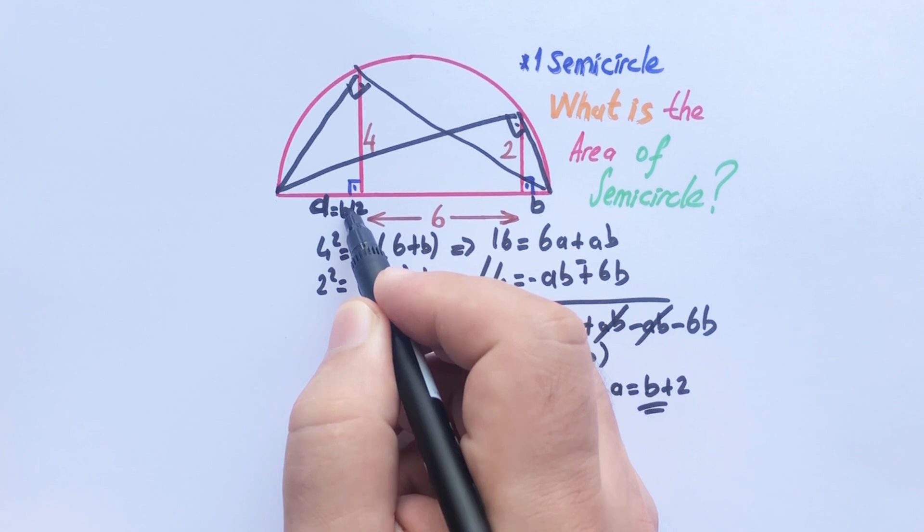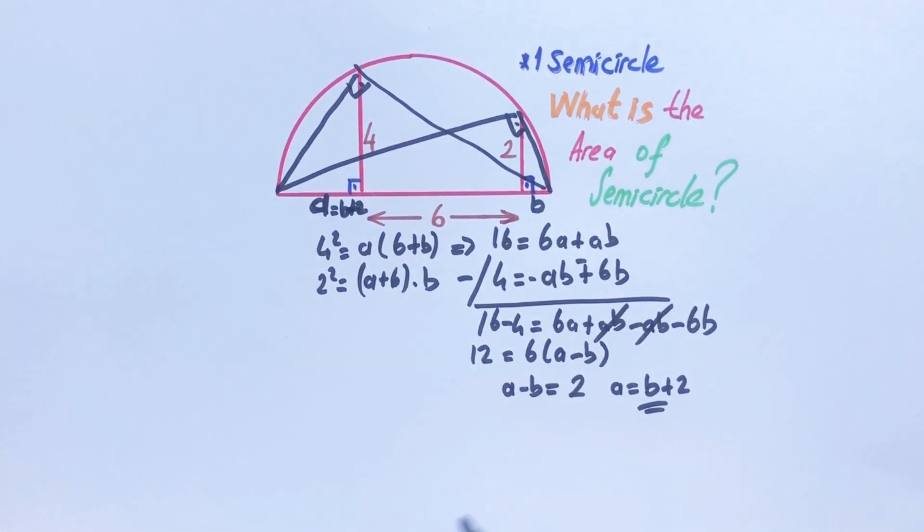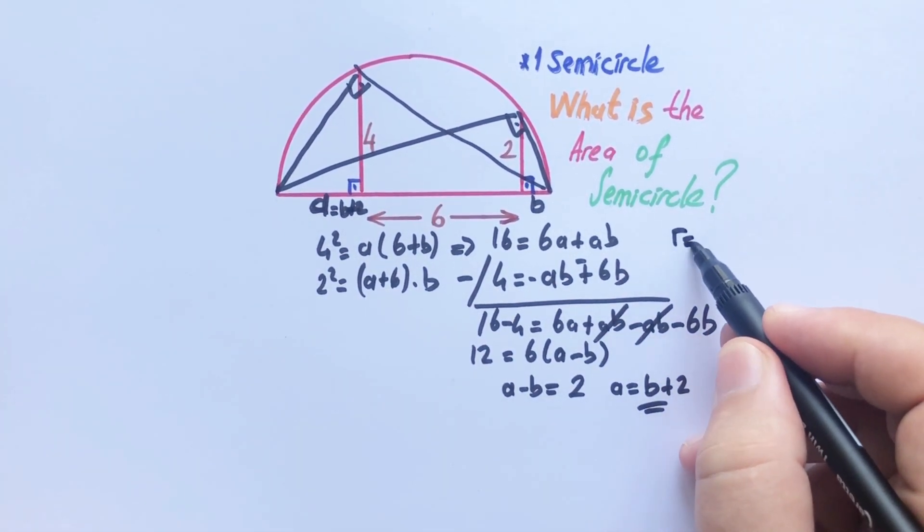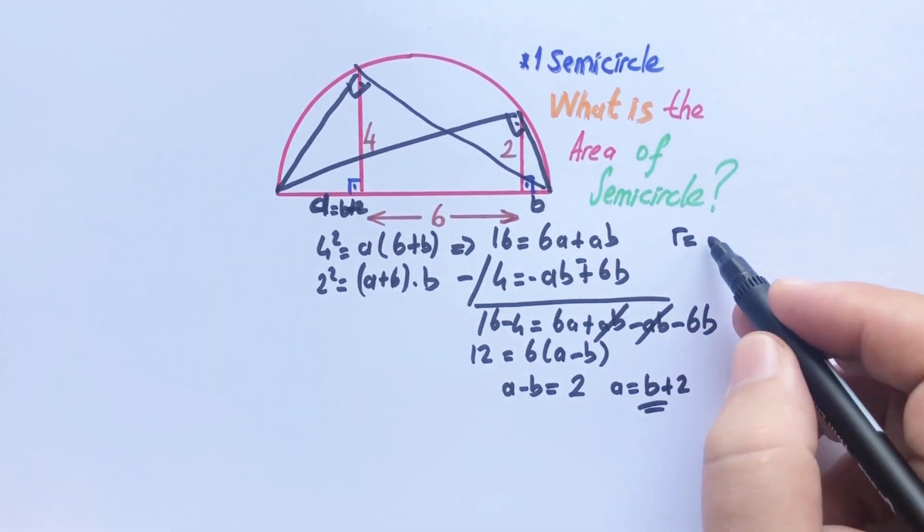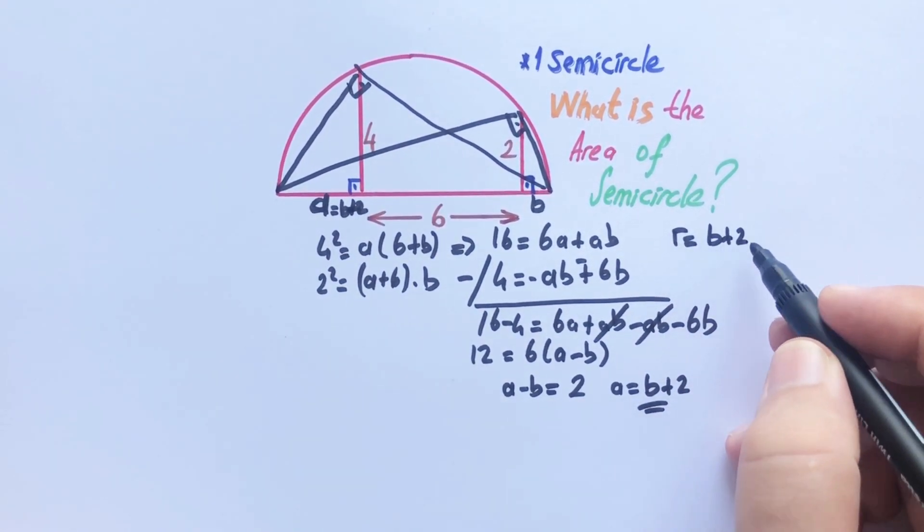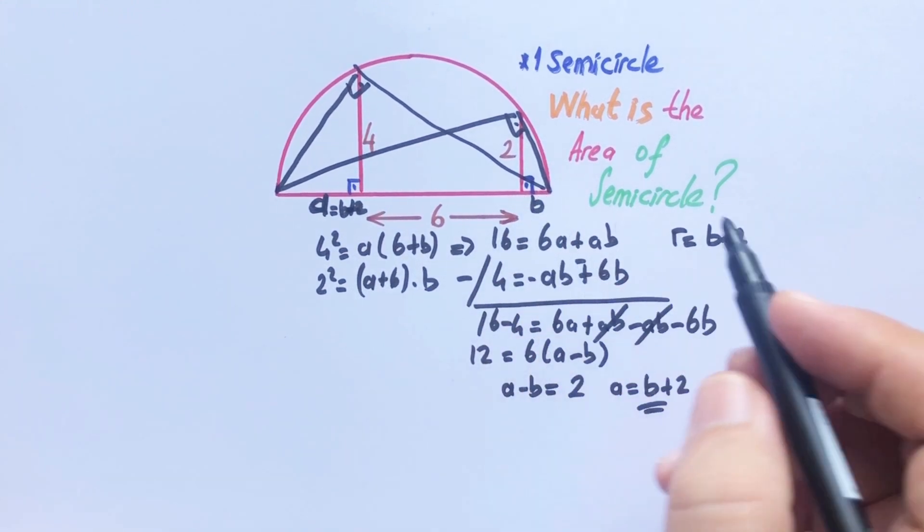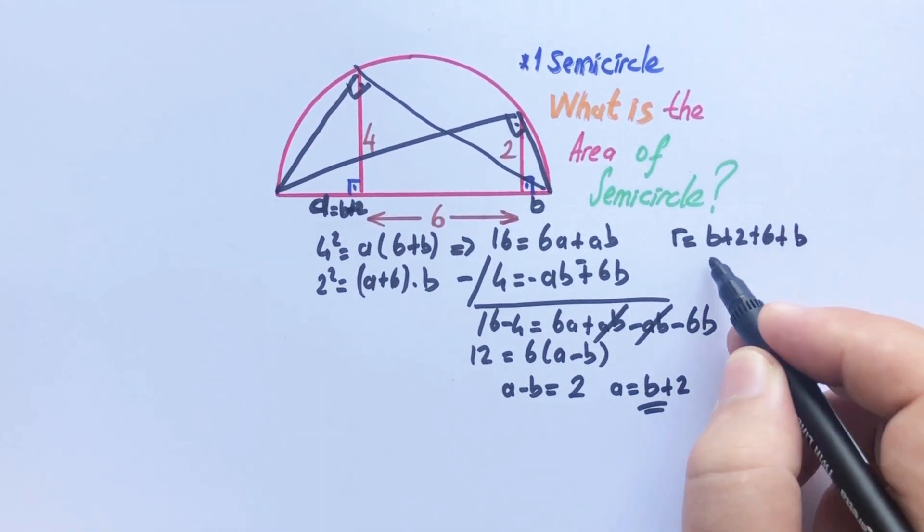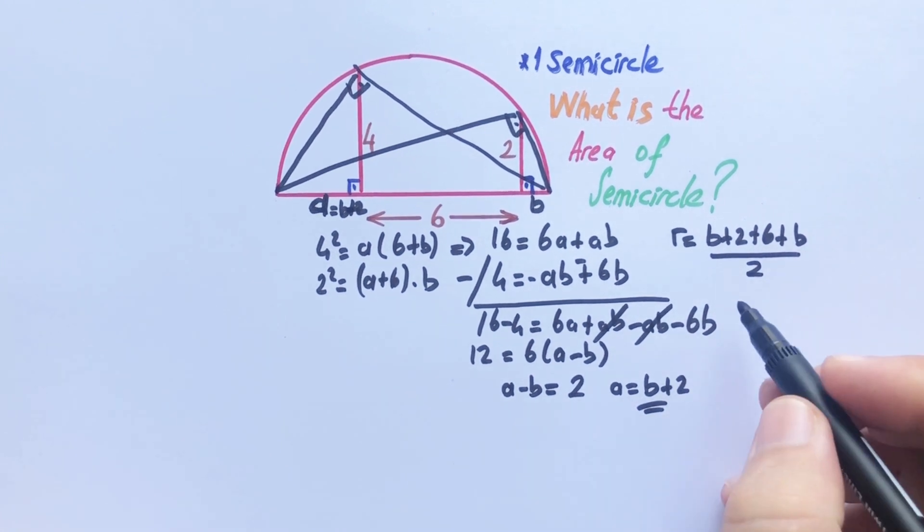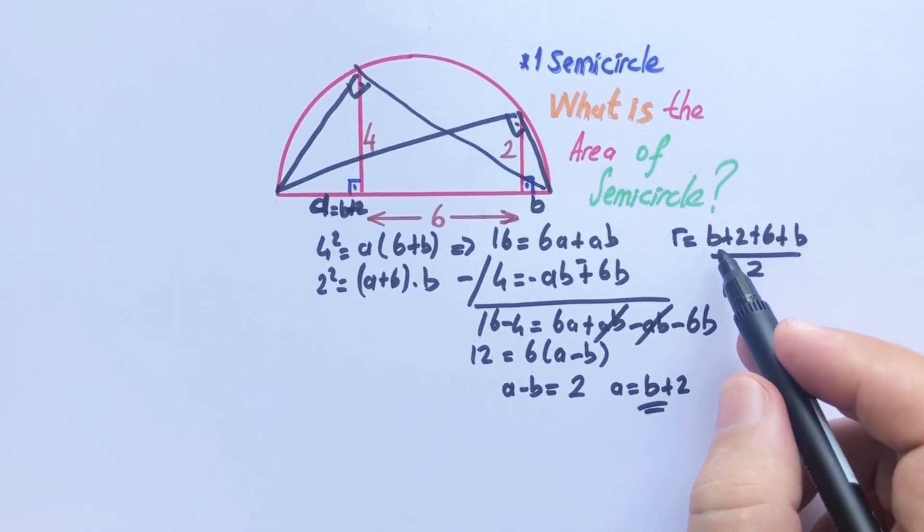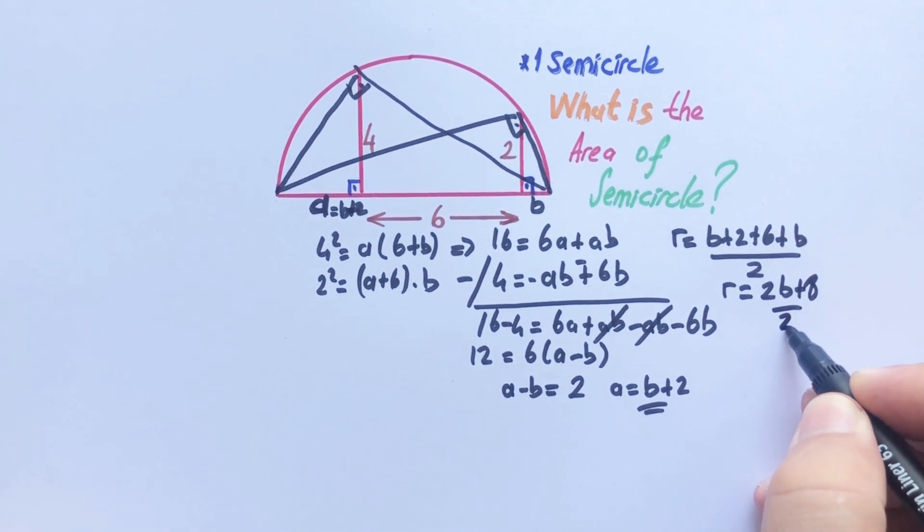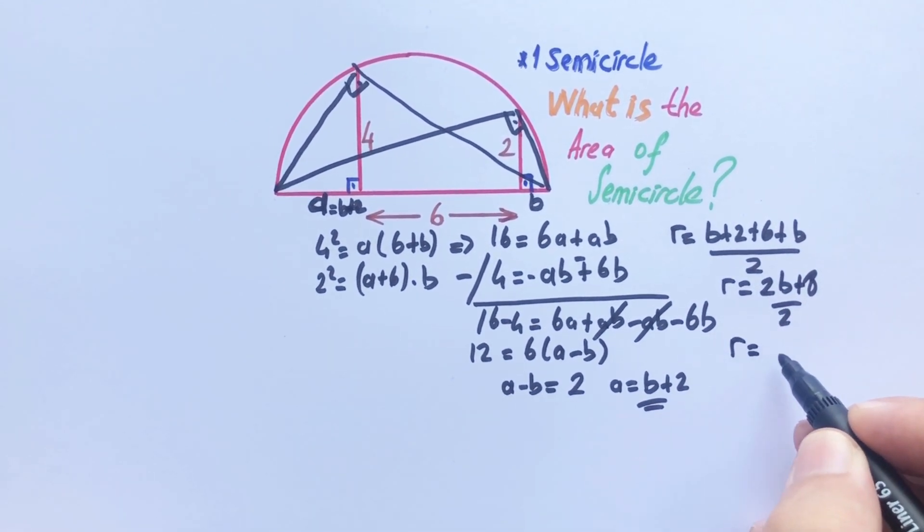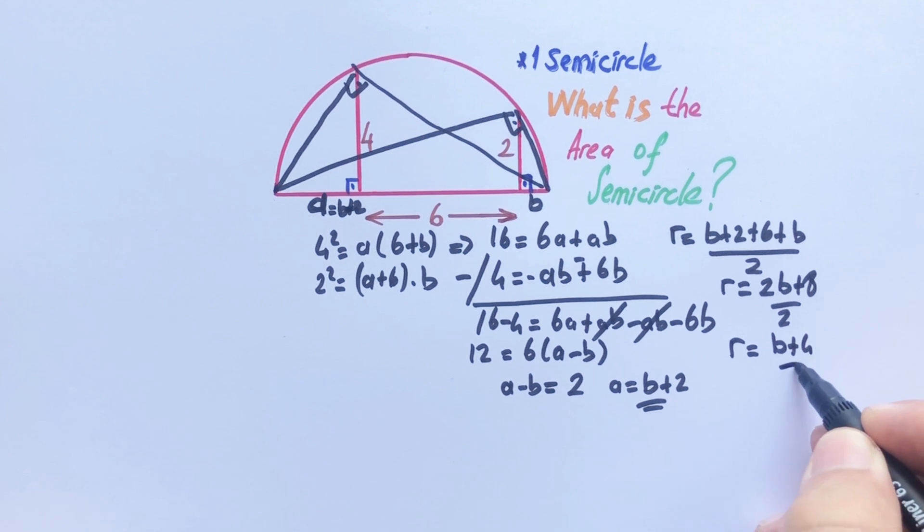a equals b plus 2, right? So radius equals this length b plus 2 and 6 plus b, this diameter. If you divide by 2 you will get the radius, so radius equals b plus 4.